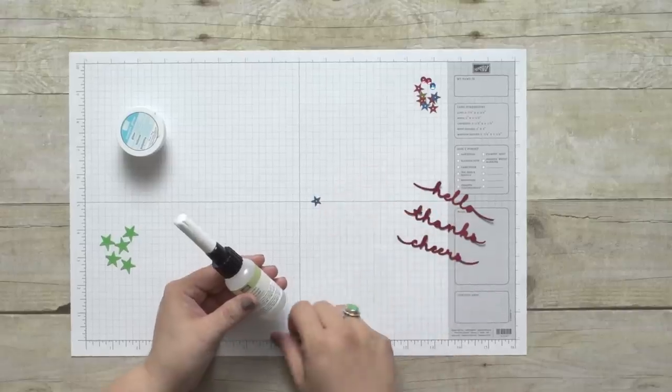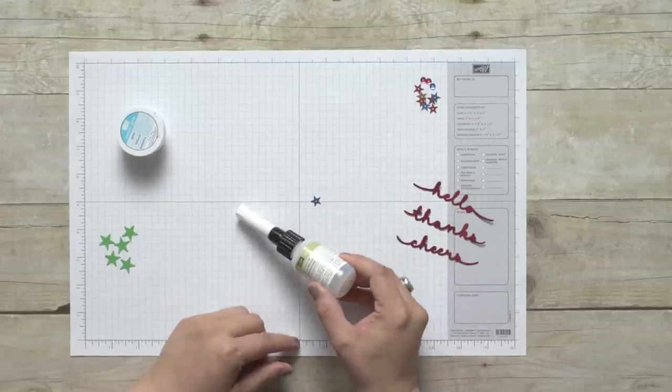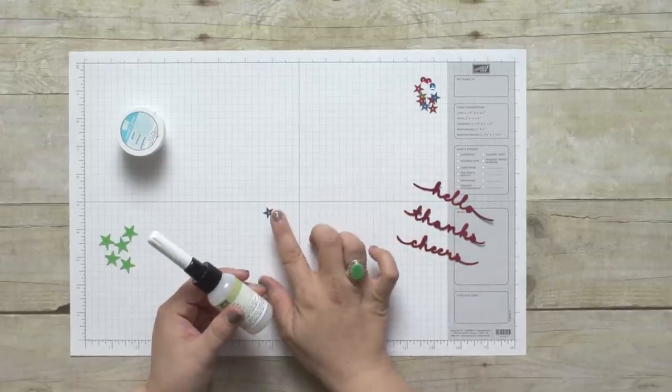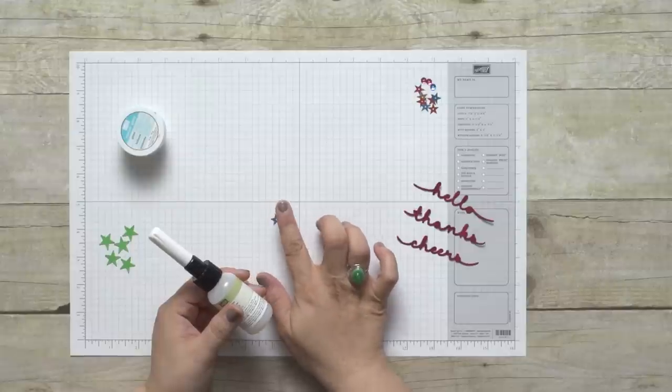For best results when you're actually using the glue, you need to put a dab on your project since the tip is so fine. Then you put your embellishment down. If I were using it on my project, I'd put a dab on my project and then I would adhere my sequin right on top of the glue. You don't need to apply a lot of pressure. The more pressure that you apply, the more glue that you get.